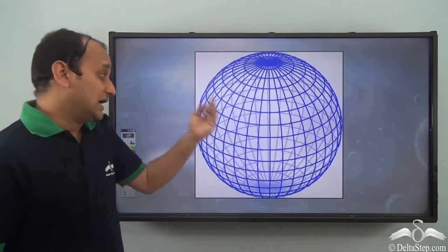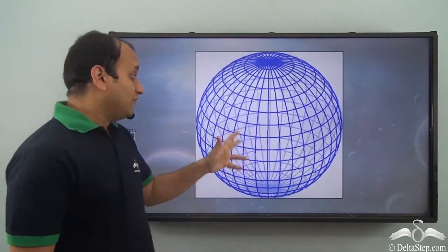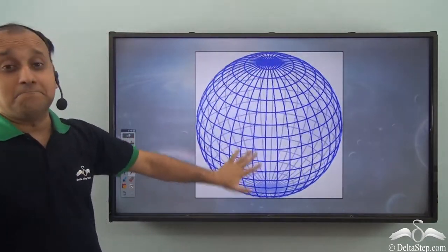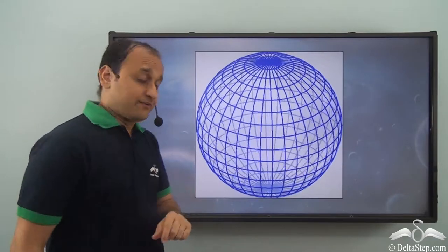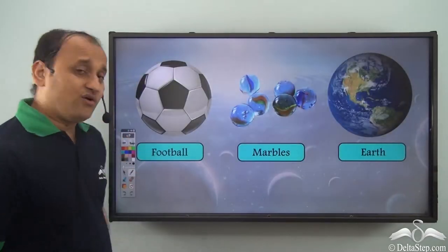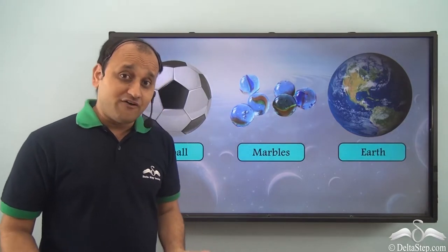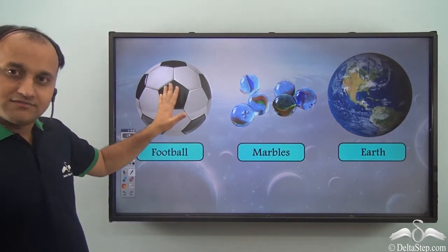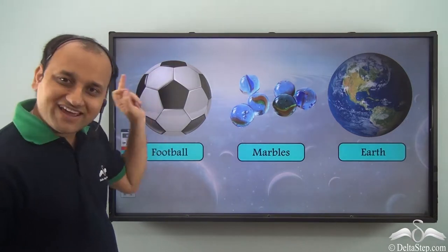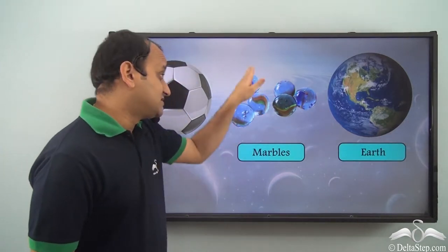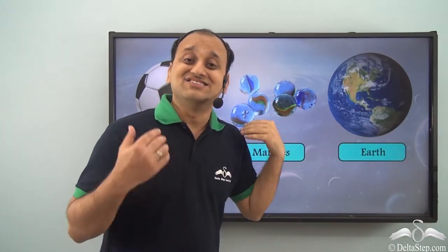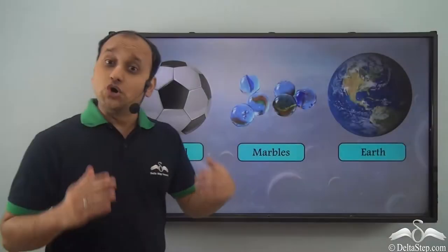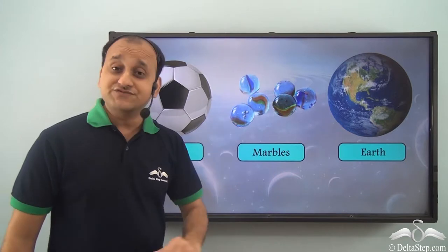This is how a sphere looks like. From whichever angle you see, it's completely round. What are some common examples of a sphere? Football is spherical in shape. Even the marbles, they are spherical in shape. And the earth — even the earth is spherical in shape. All these are common examples of spheres.